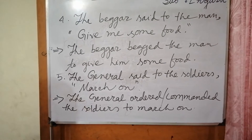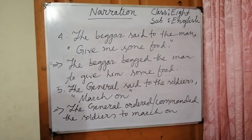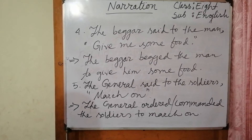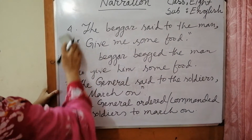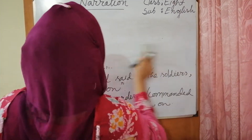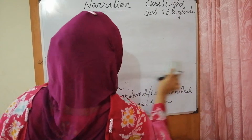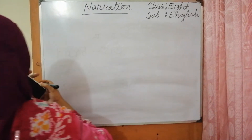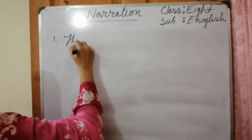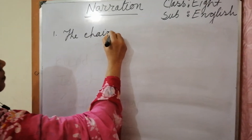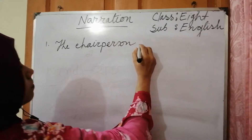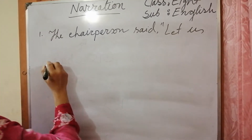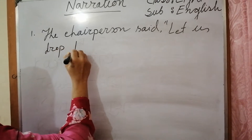So dear learners, I think you have learned the rules and you would be able to change imperative direct speeches into indirect. Now I am going to write two sentences on imperative sentences that are a little bit different from those imperative sentences. Number five: 'The chairperson said, let us drop the matter.'